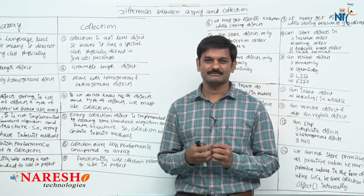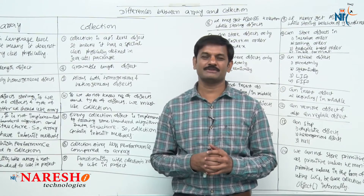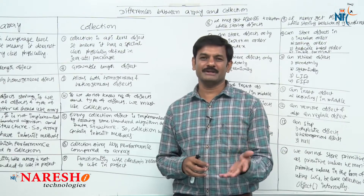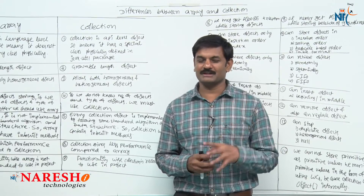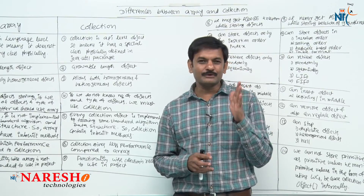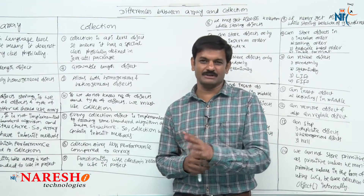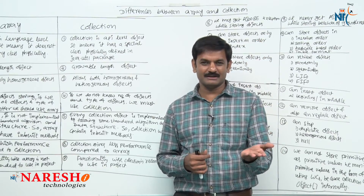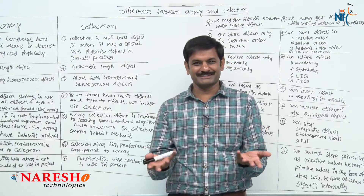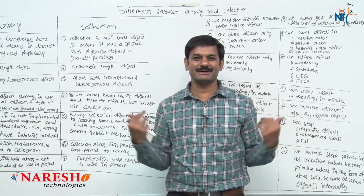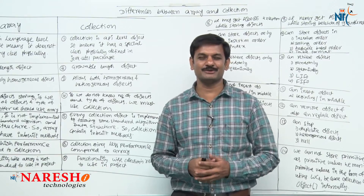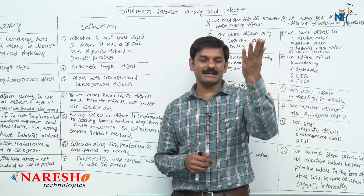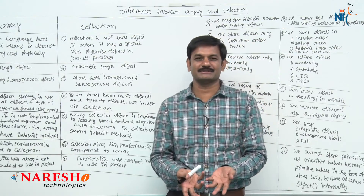Is there any clue to remember? Yes, there is a clue to remember the differences between array and collection. The clue is nothing but the problems of array. We learned 4 problems in array — remember? The solution to those 4 problems is collection. So the simple point is: array cannot do this; collection can do this. That's it. Array and collection differences are covered.